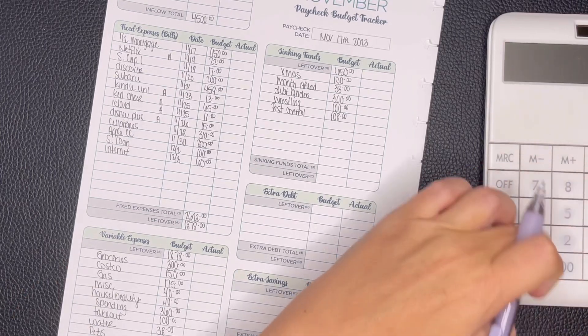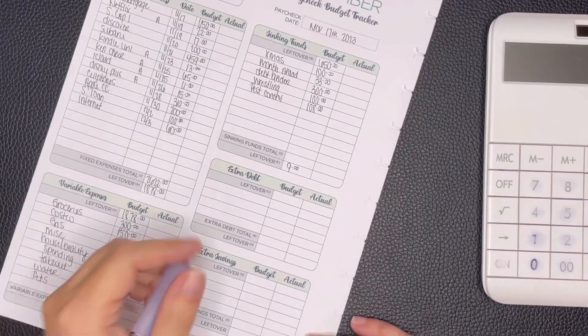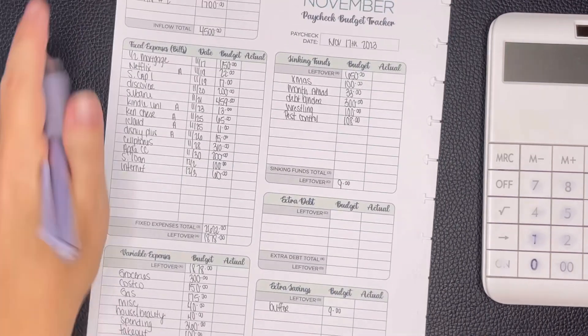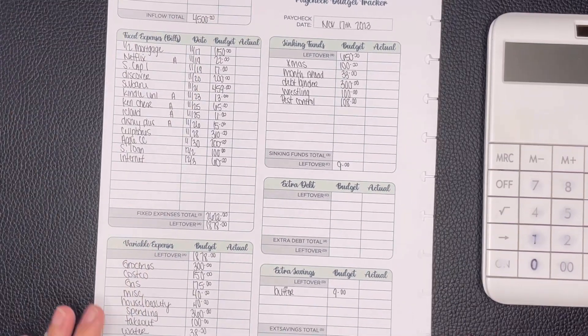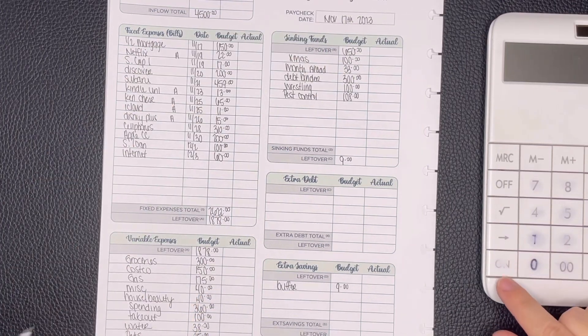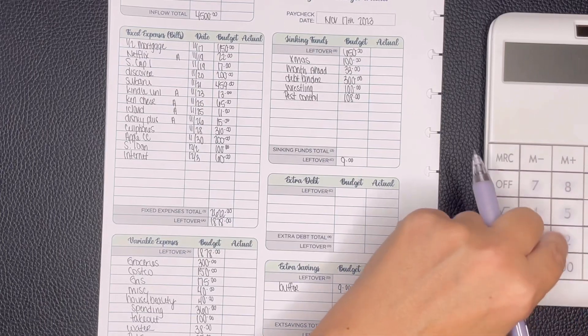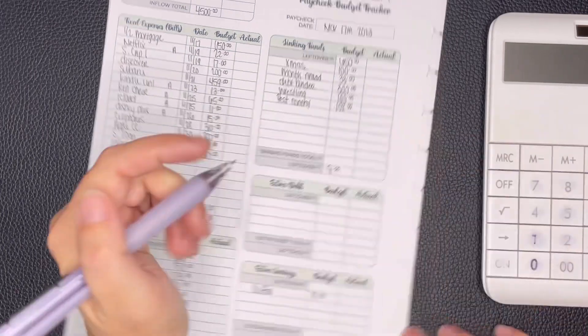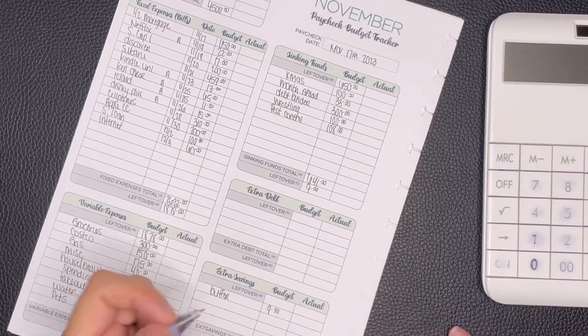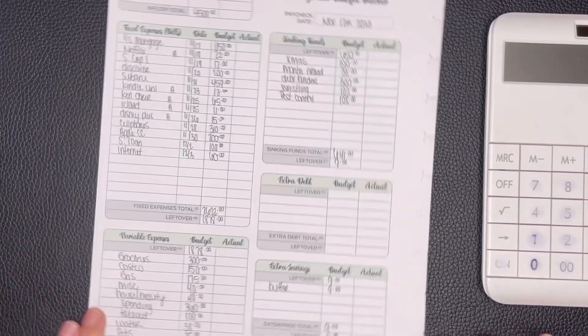That is going to leave us with $9. We're just going to leave that in the checking buffer. So it'll just rebuild that buffer back up that I'm still working on from helping my son out. It's not a ton, but every little bit helps and every dollar is now accounted for. Let me just add these up separately so I can put that number in there for peace of mind. That's $641 going to our savings and debt, and that leaves us with the $9. And then that brings us to a zero base budget.